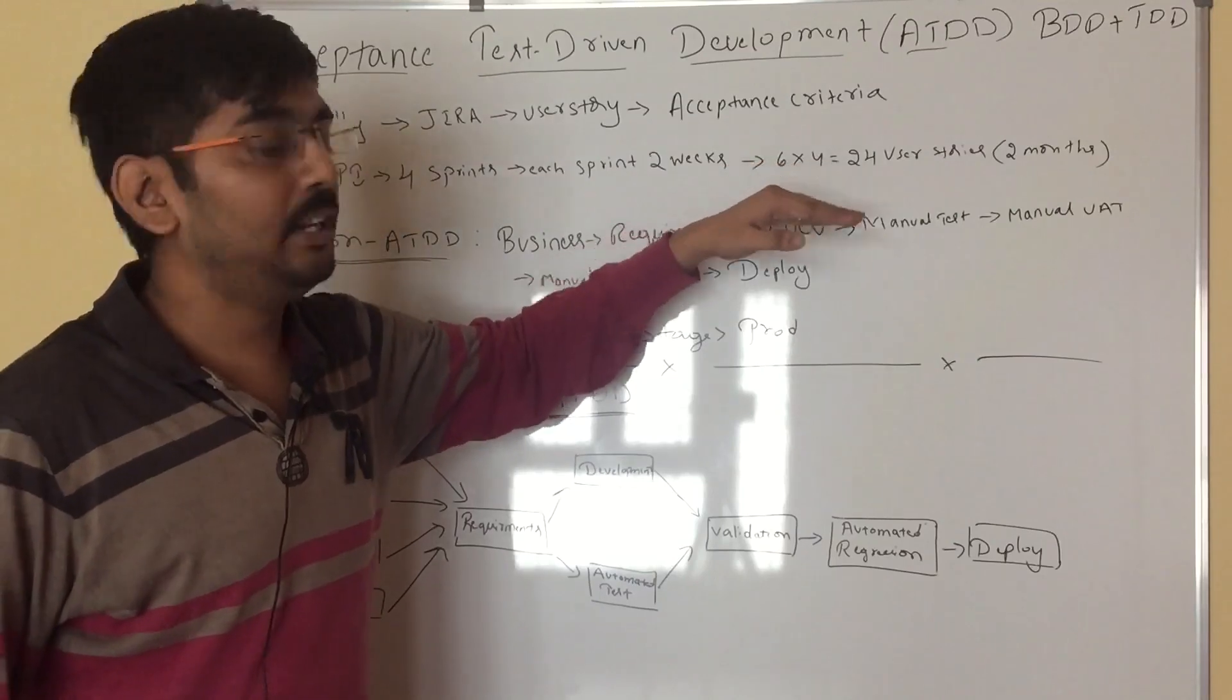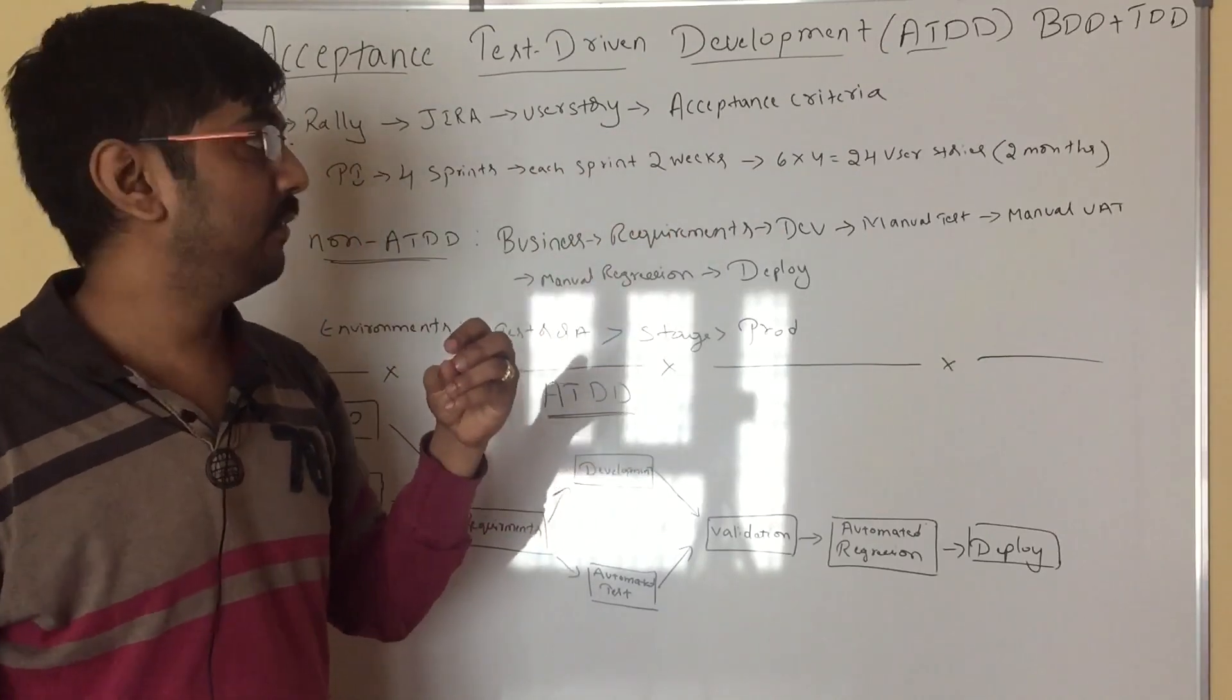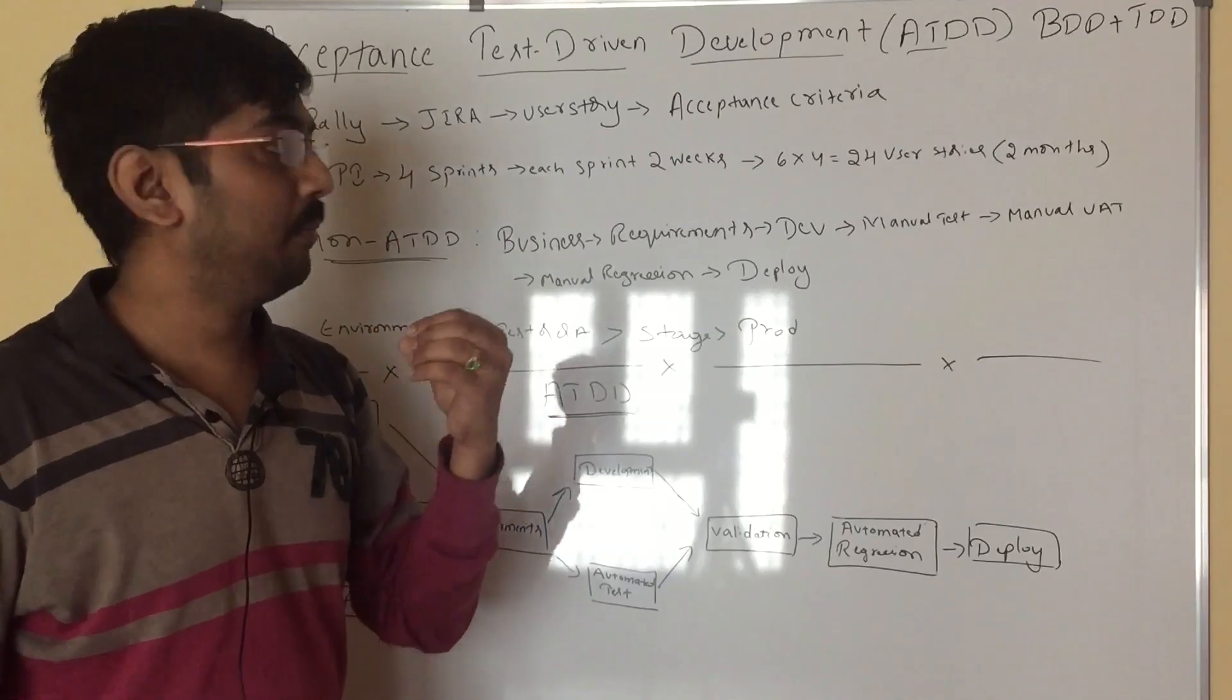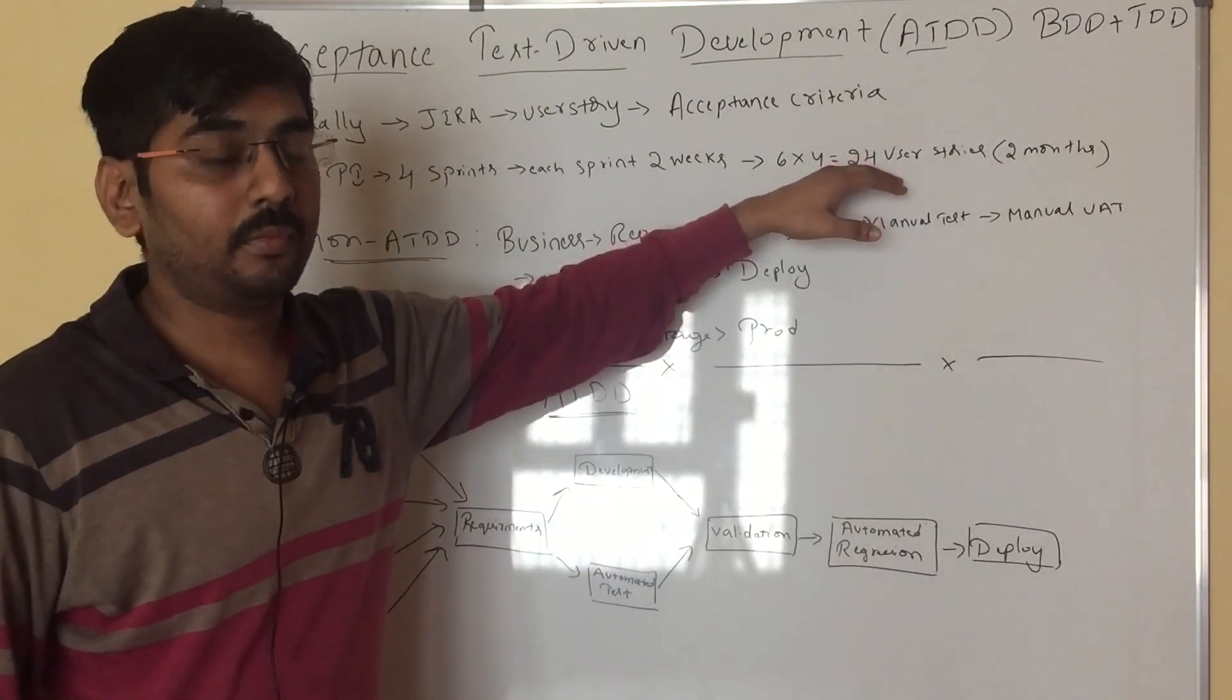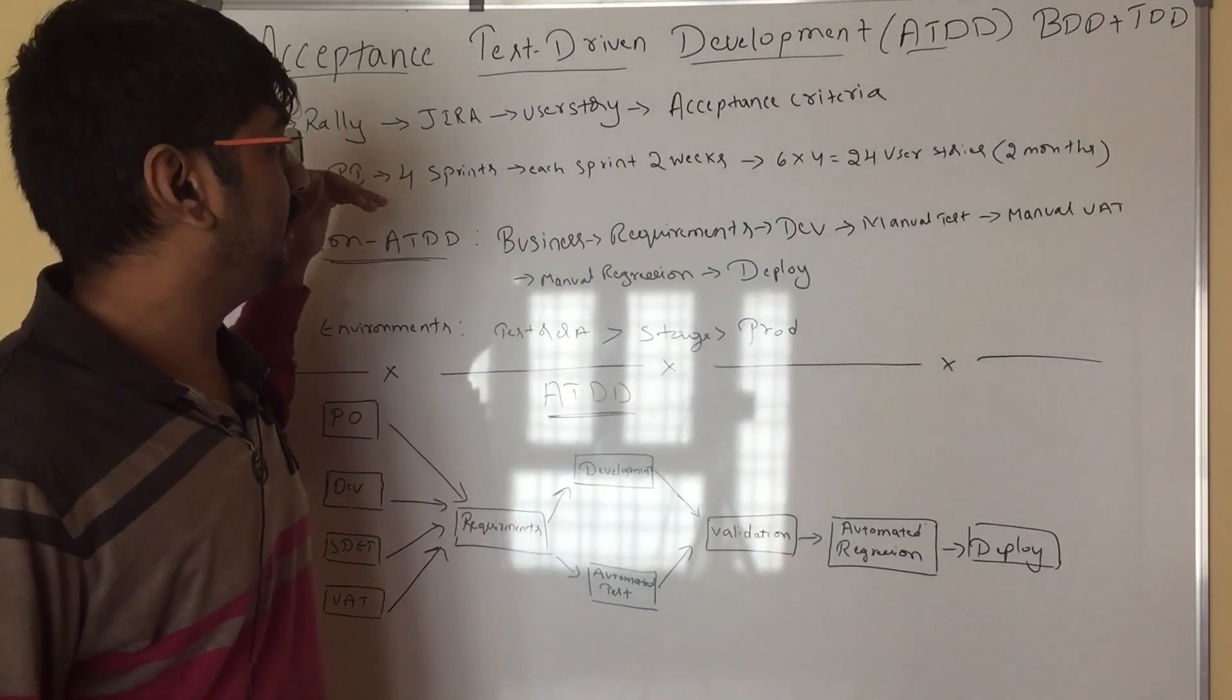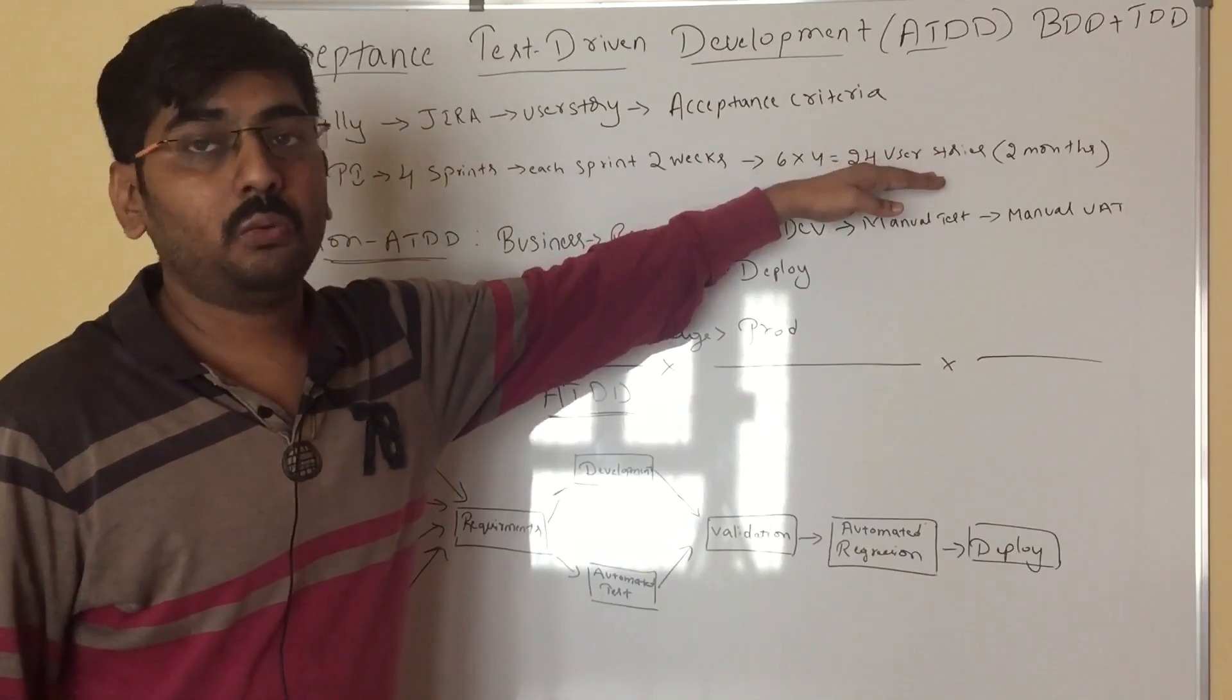If I do it manually, each sprint I need to write the manual test cases. For that one in ALM or whatever tools they are using for manual test cases, you are writing 24 user stories and you need to test them. After this PI, you will be having a regression. You need to do one round of regression. Think about it. For two months, you are having this much of efforts.